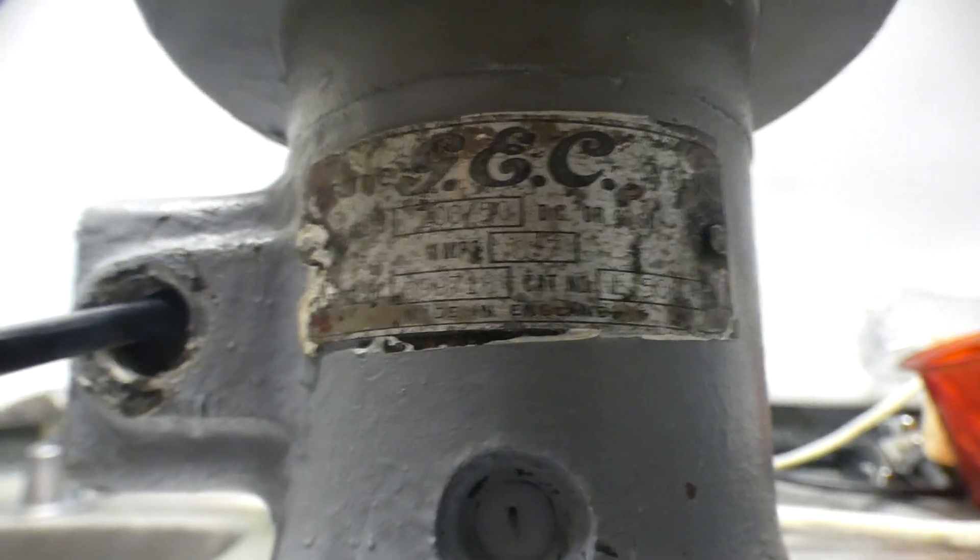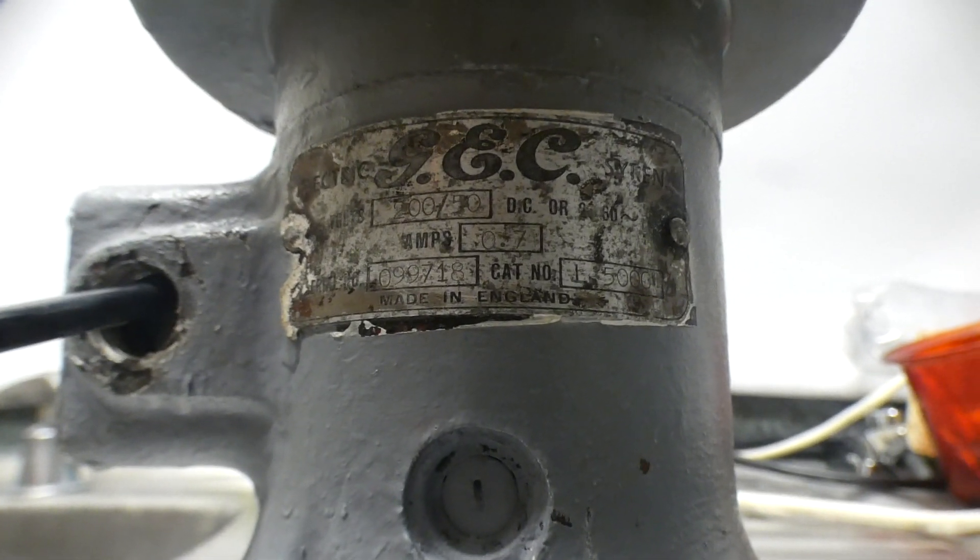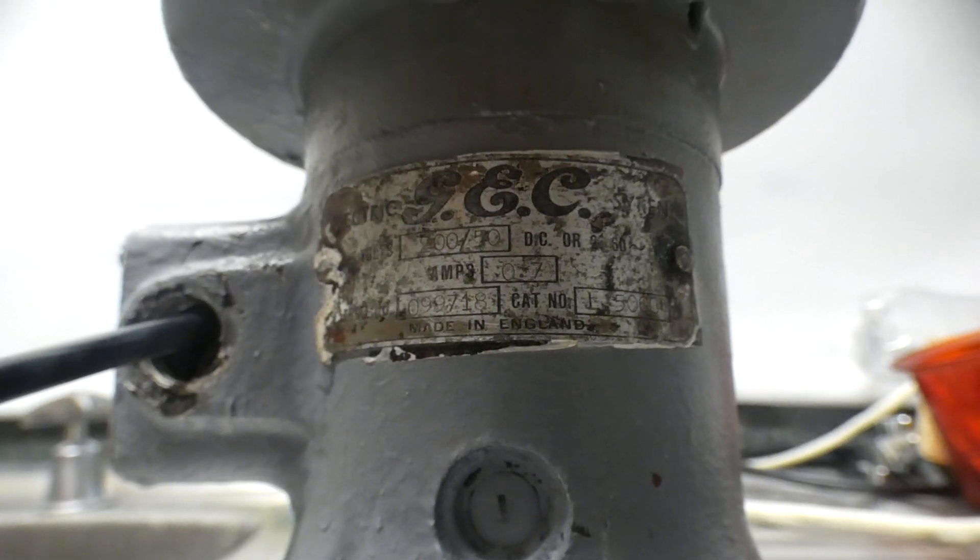This siren runs on 250 volts AC or DC. It draws 7 amps.